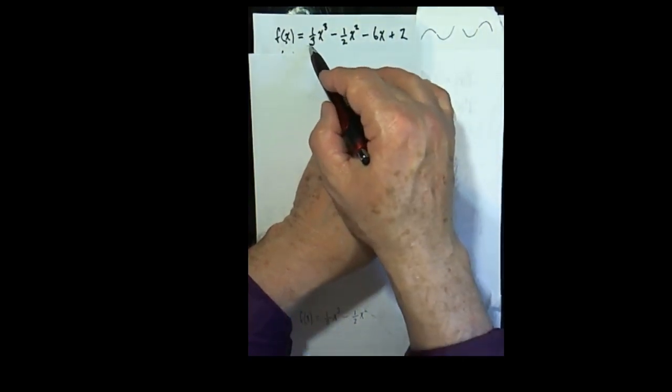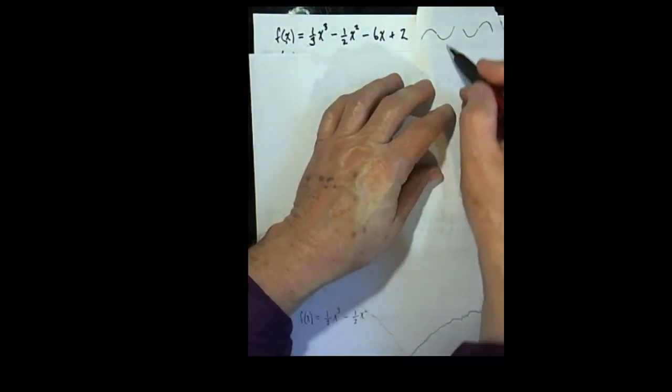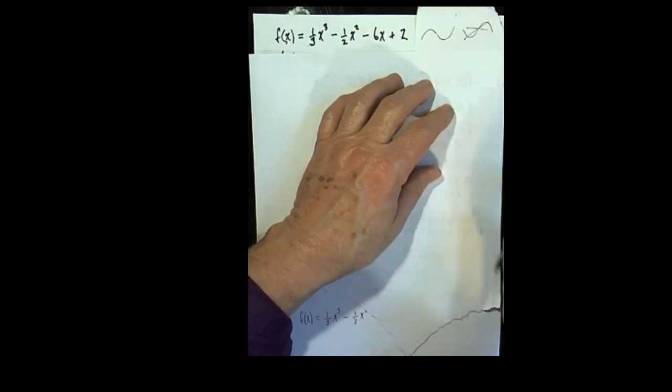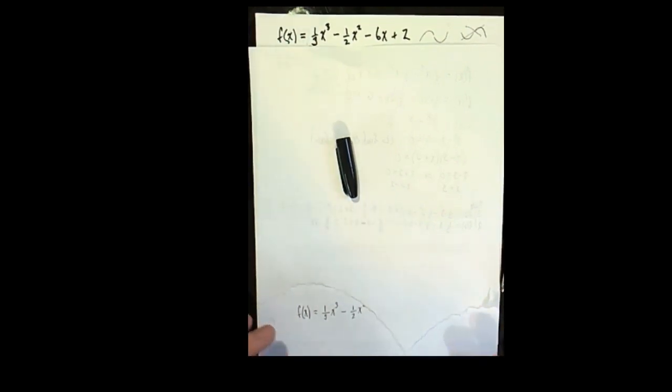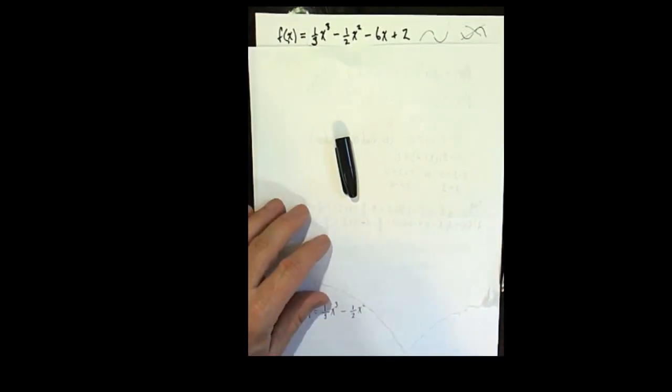You know that the end behavior, because this leading coefficient is positive, that it will be going up in the end, so this is not what the graph looks like. All we want to do in this video is show how easily the derivative corroborates that knowledge that you already have.